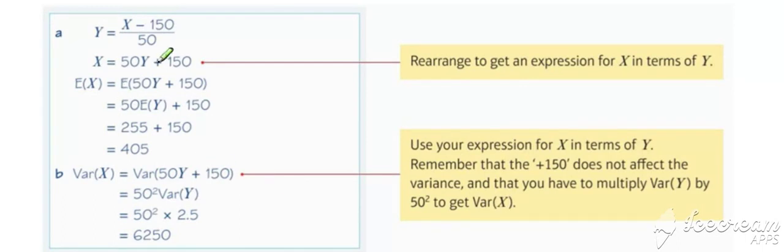And here's our solution. So we know that the expected value of X is equal to the expected value of 50Y plus 150, because we've rearranged Y to make X the subject.